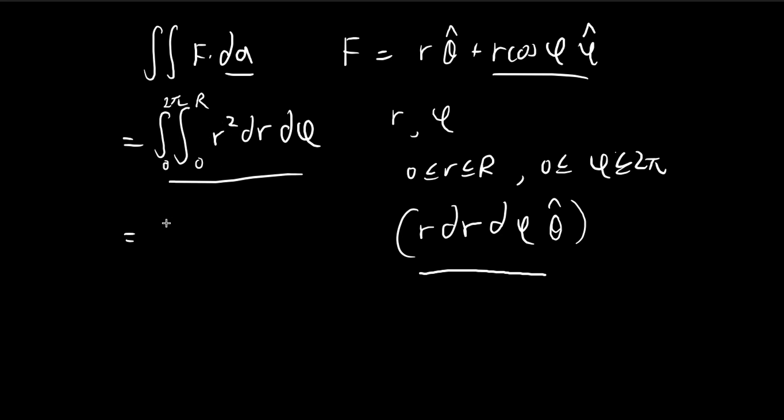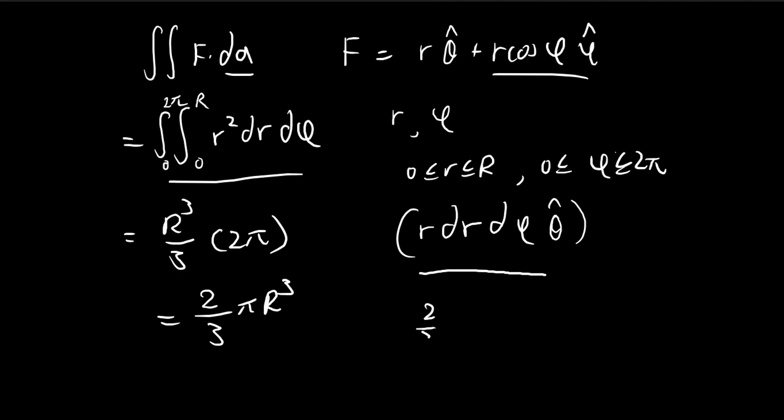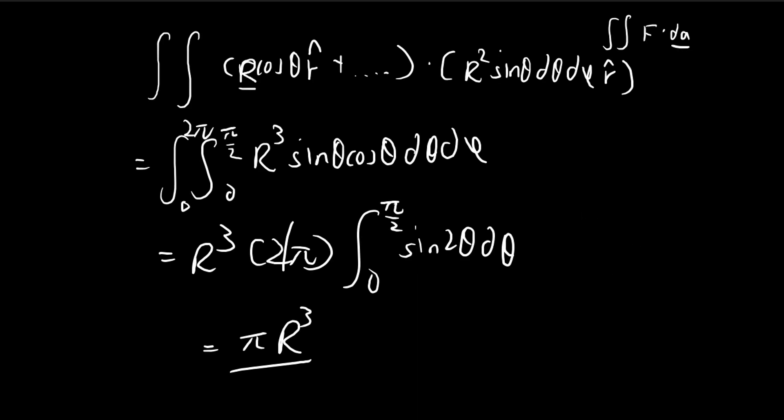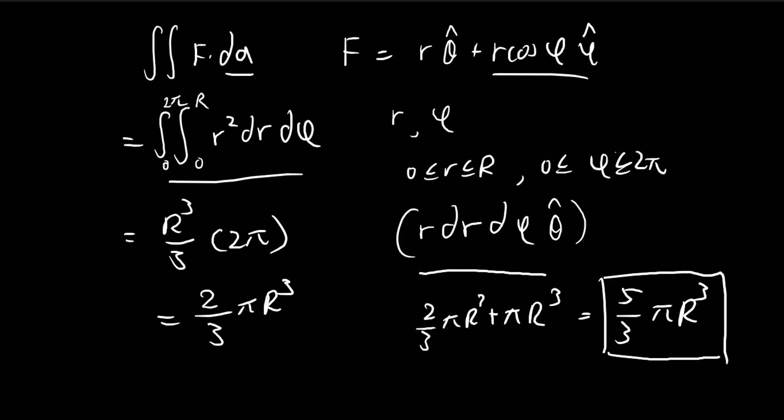So evaluating this integral over here, that dr gets r to the power of 3 over 3, and then integrating out the phi, you get 2 pi. So you get 2 over 3 pi R to the power of 3. And if you combine it with this component over here, you essentially get the answer that we've been expecting. So you can see it's the same as this. So the divergence theorem checks.